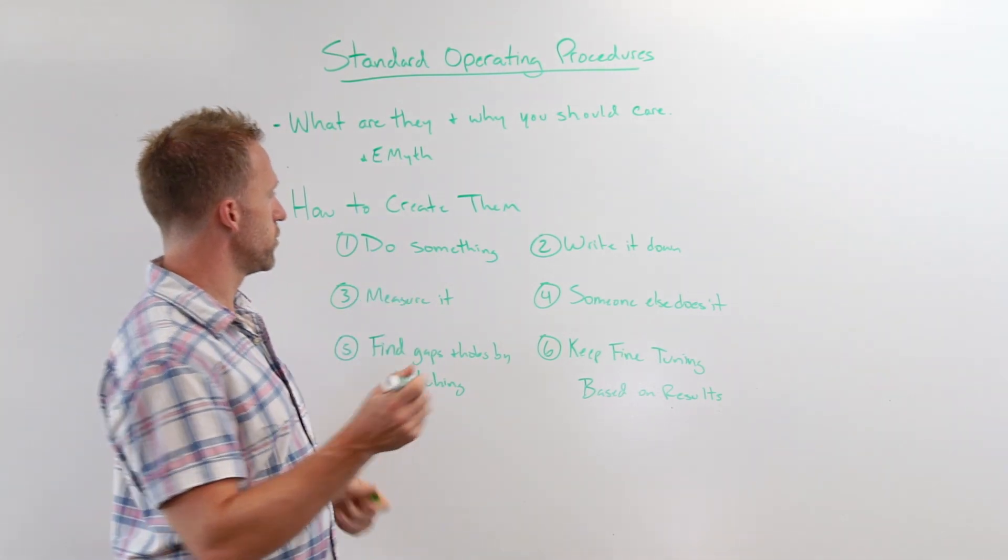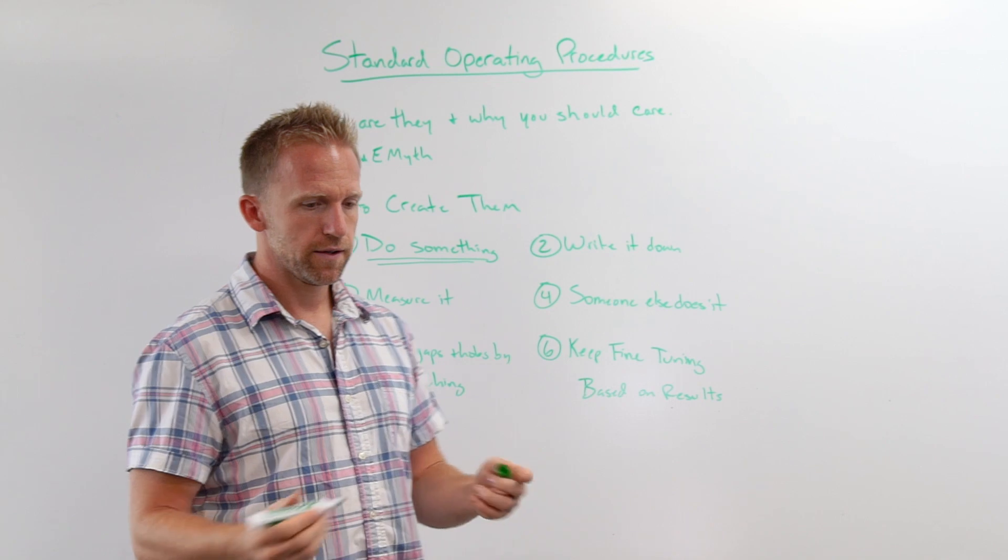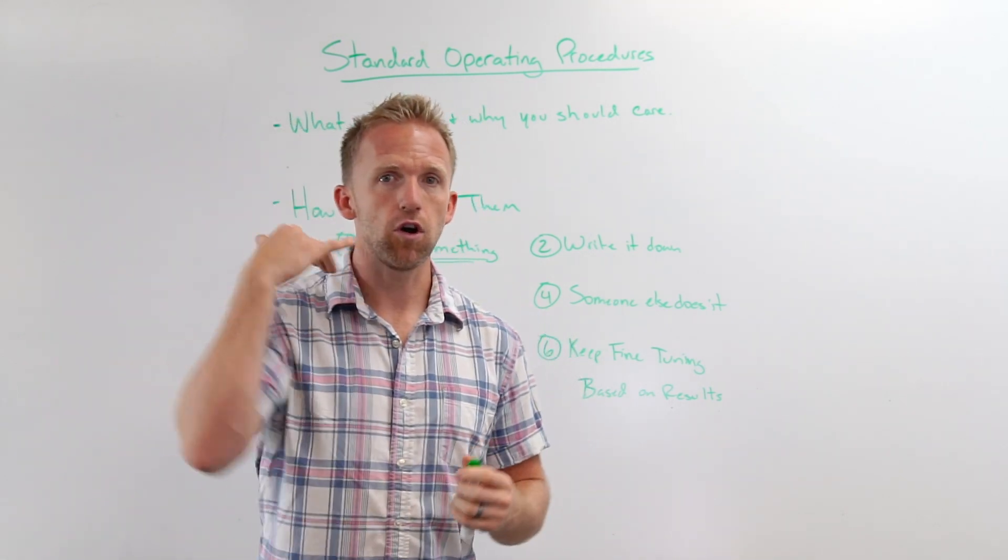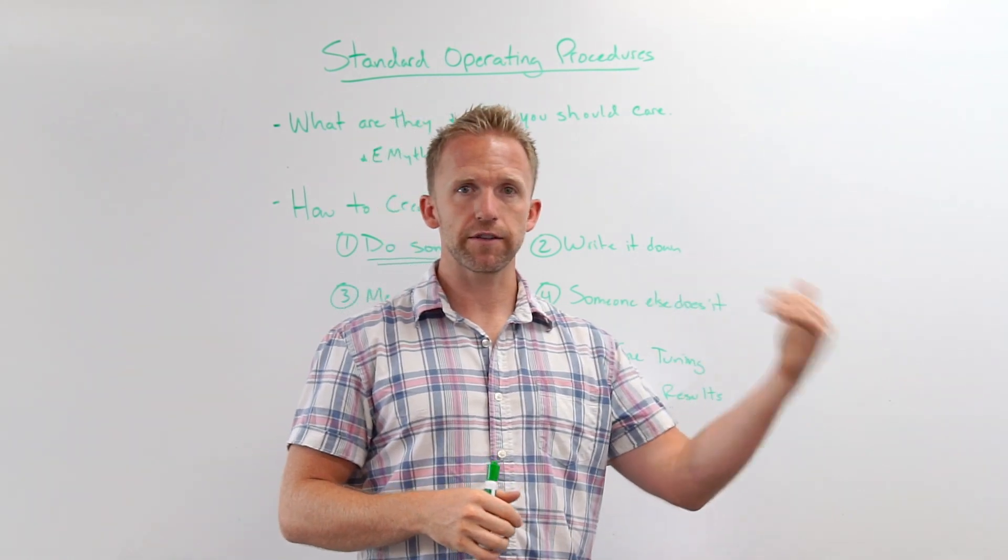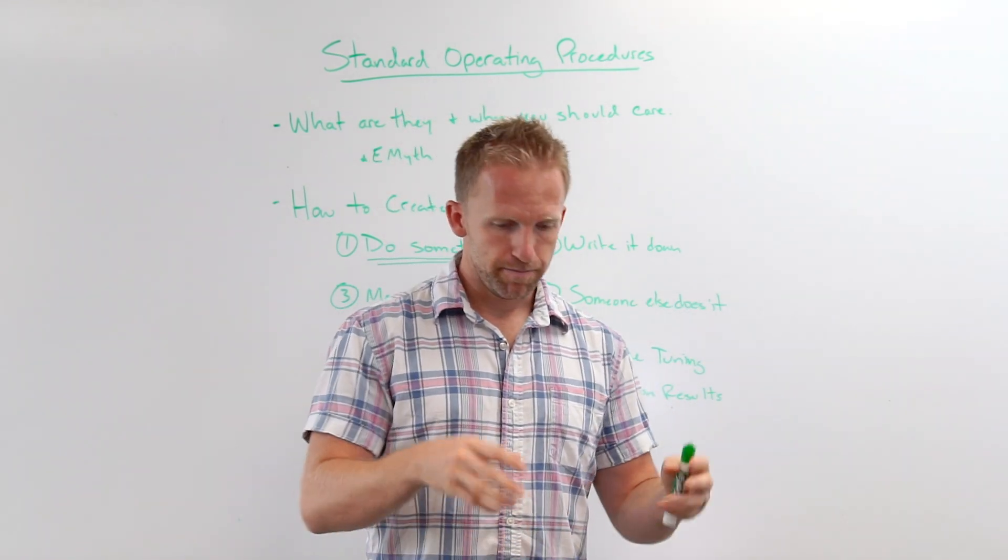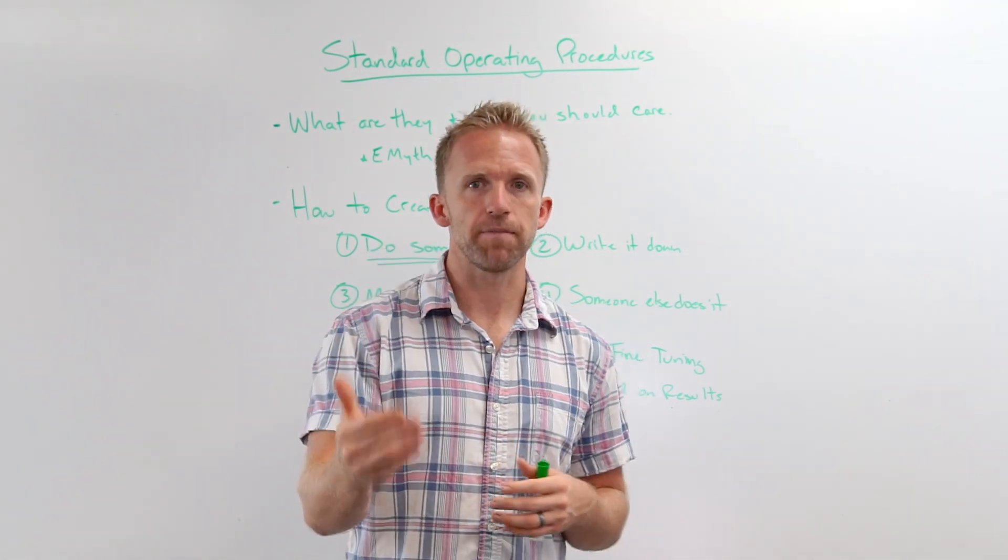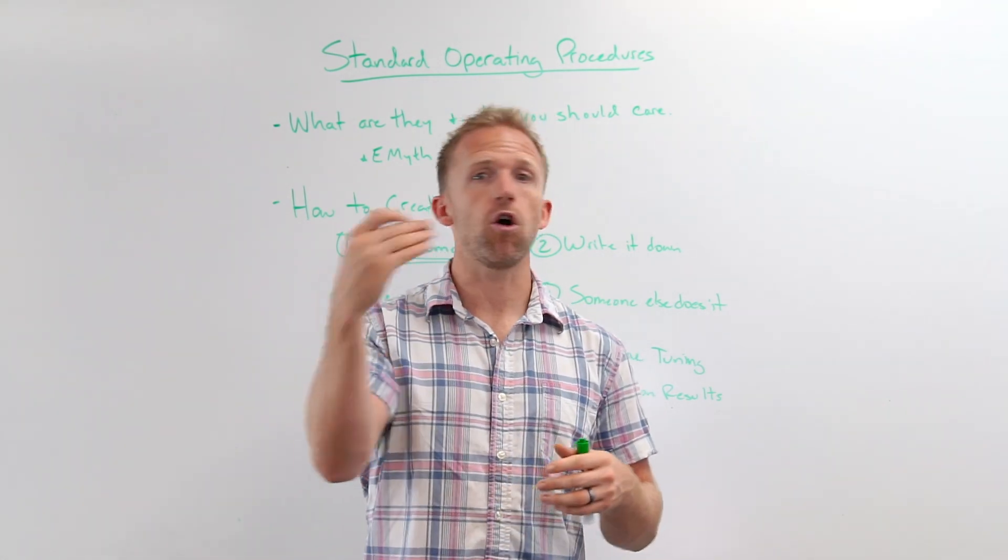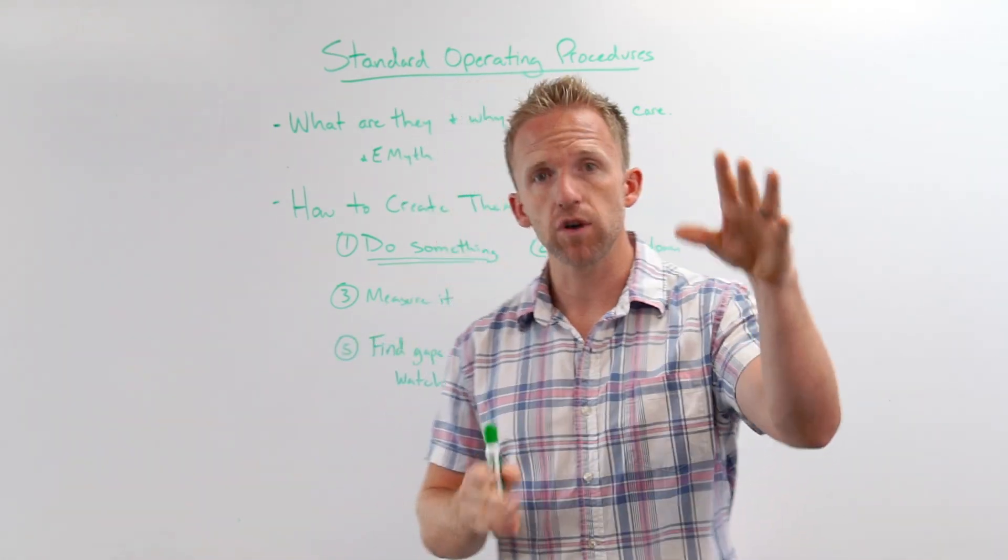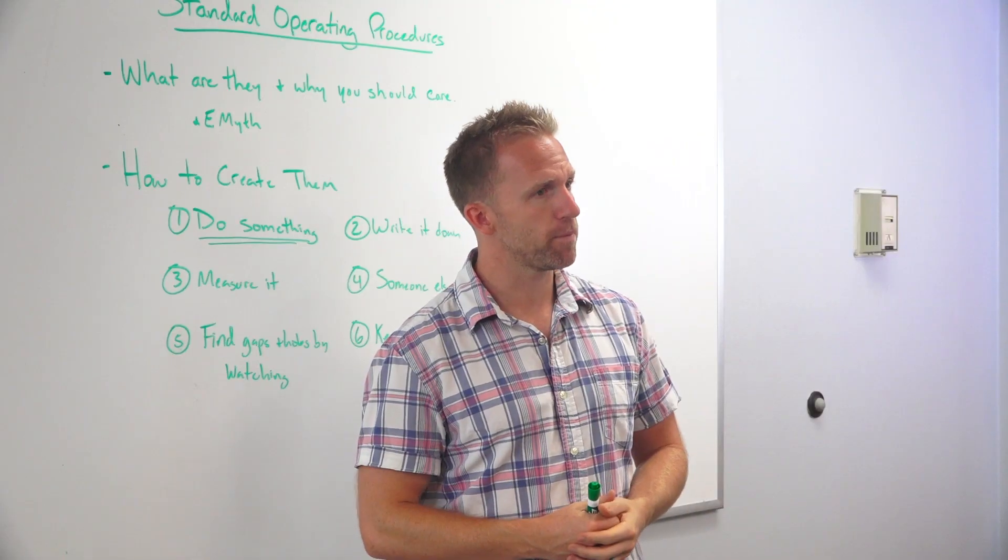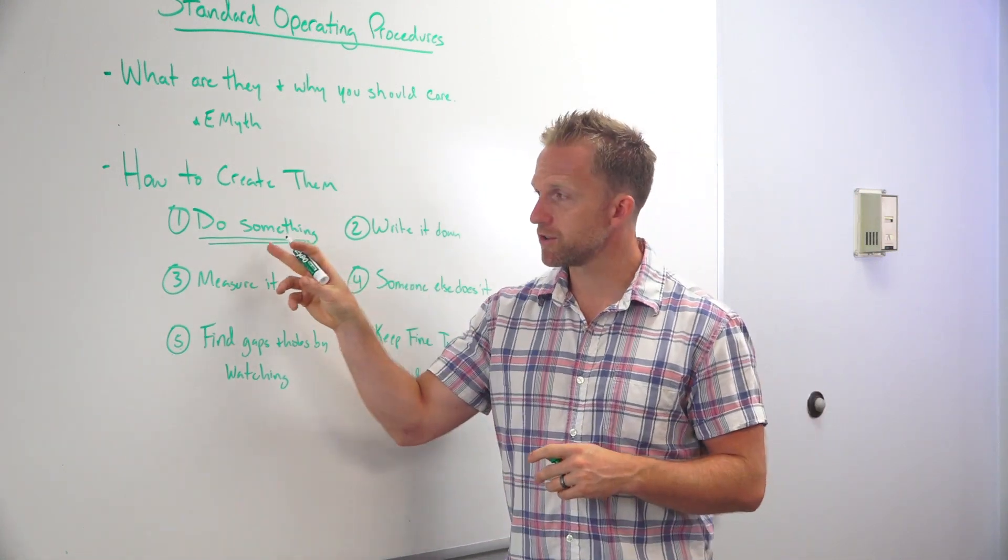So let's jump into kind of some of the steps to doing this. So the first thing you do to create a standard operating procedure is you actually do something. Like maybe it's you call the client and set up an estimate. You do a final walkthrough and collect the check. You actually create a production schedule. You're doing something. You're doing something every day, all day in your business. And everything you're doing in your business should become a standard operating procedure.